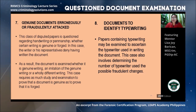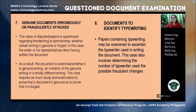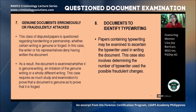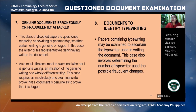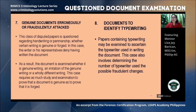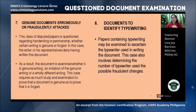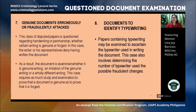The eighth class is documents to identify typewriting. The issue here is to determine what kind of typewriter was used — whether it was a pica, elite, IBM, or electric typewriter — as well as whether fraudulent changes or alterations were made through typewriting. These are the eight classes of questioned documents as discussed by Albert Sherman Osborne, the father of questioned document examination.